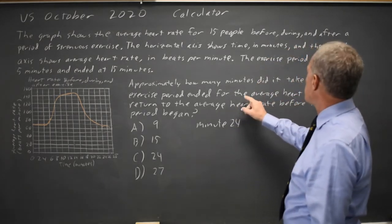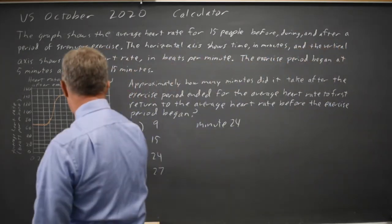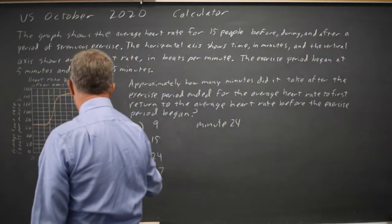The question says how many minutes after the exercise period ended, so that's not since minute 0, that's minute 15 to minute 24, and 24 minus 15 is 9.